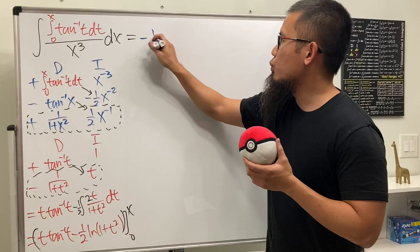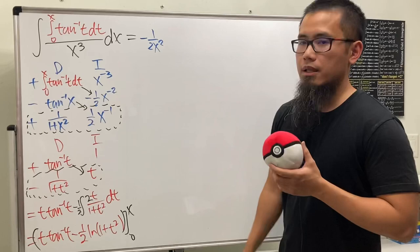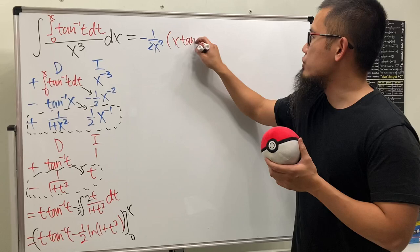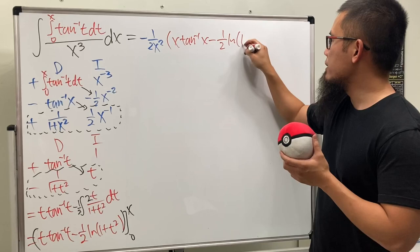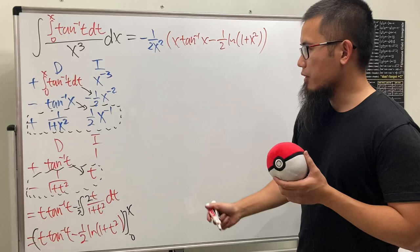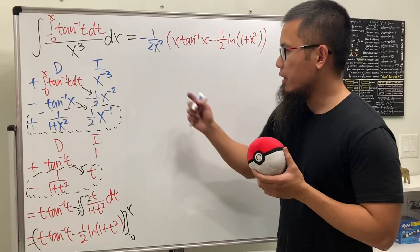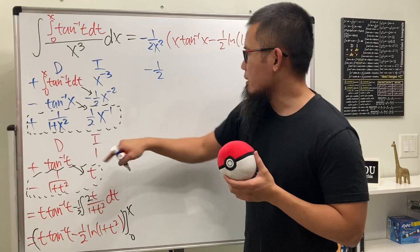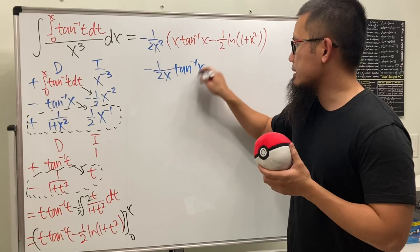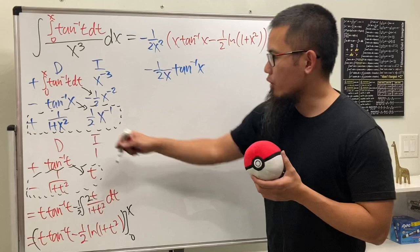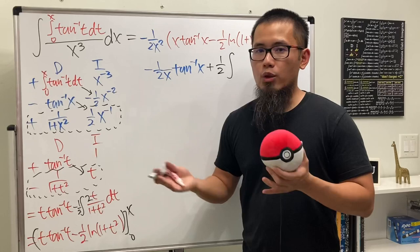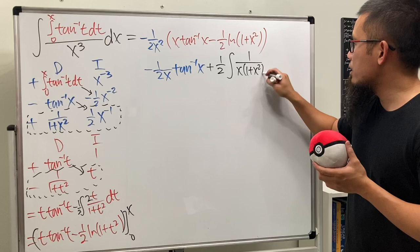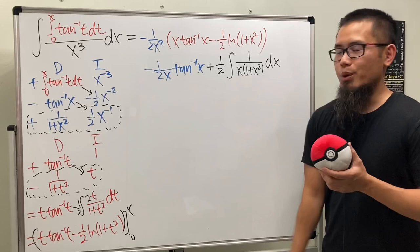Now let's assemble the answer. The first part comes from this times that in the DI table: negative one over two x squared, times the red part in parentheses — x times inverse tangent of x, minus one half ln of one plus x squared. For the next part, we have this times that: negative one half, with one over x times inverse tangent of x. Finally, we have plus one half integral of one over x times one over one plus x squared dx.